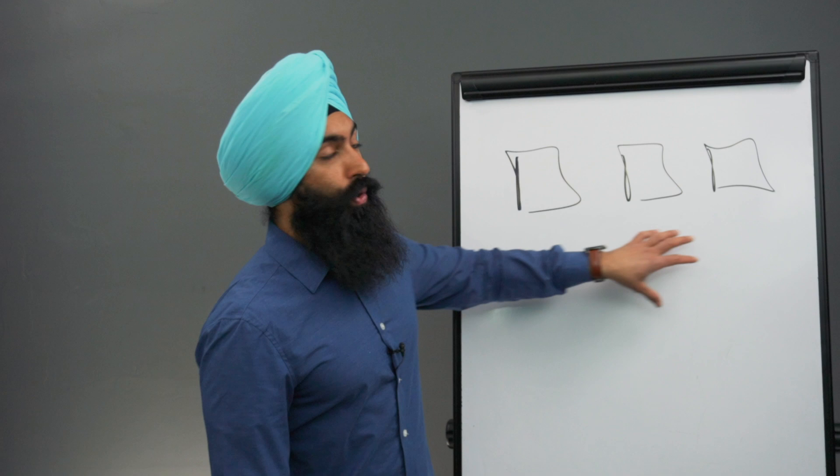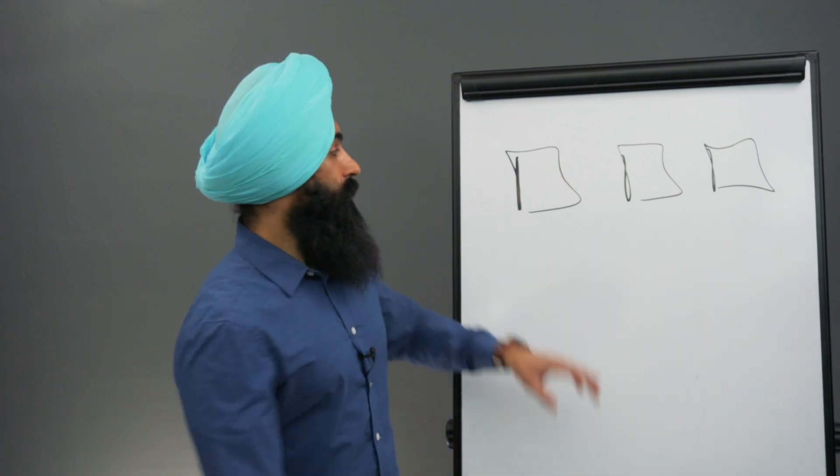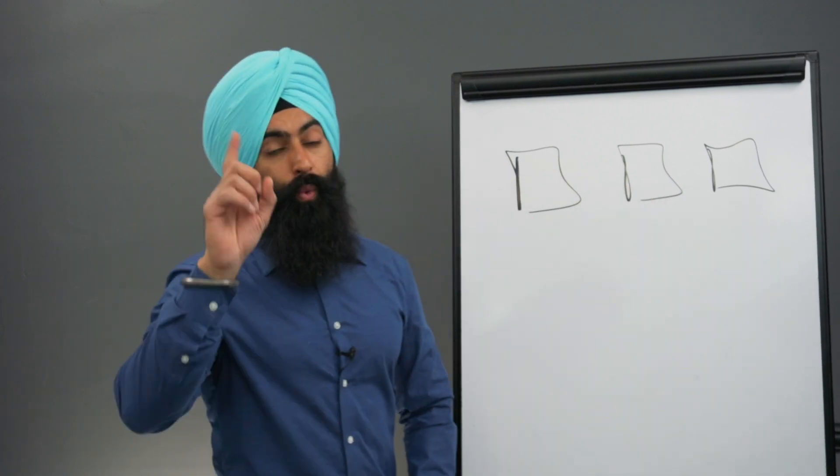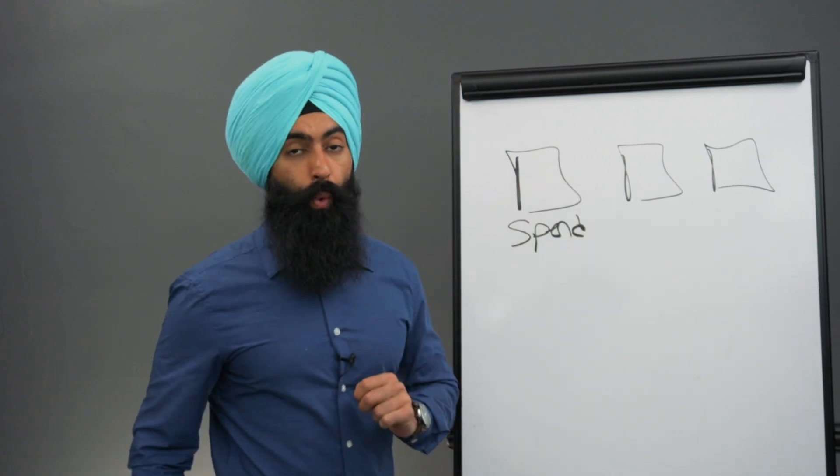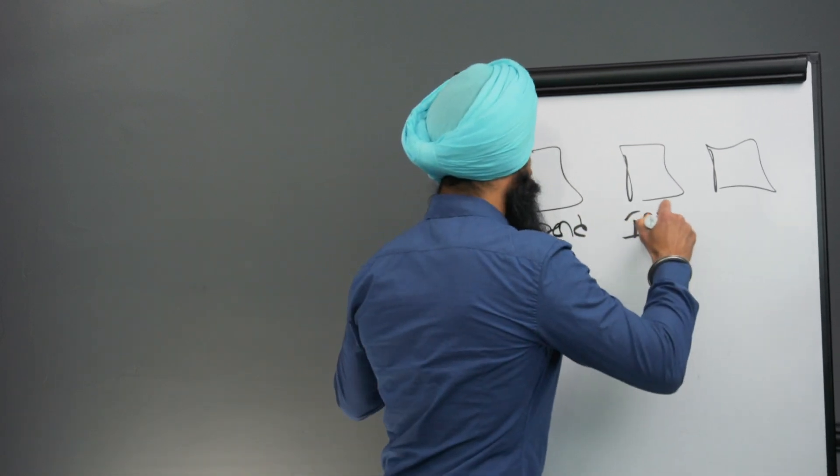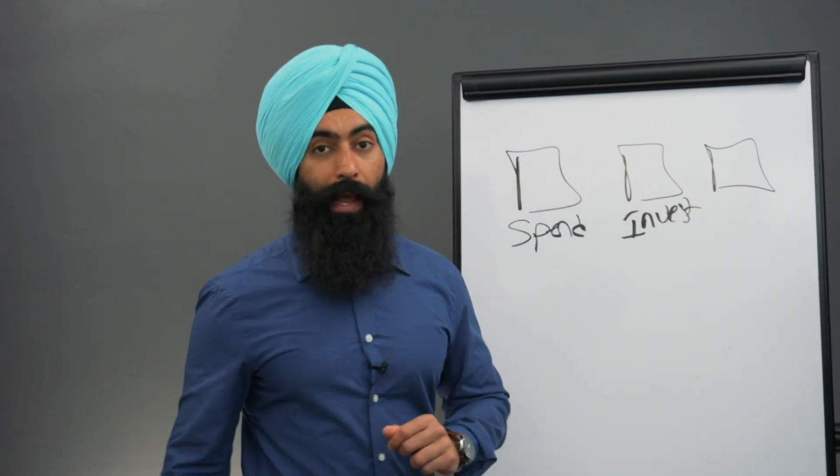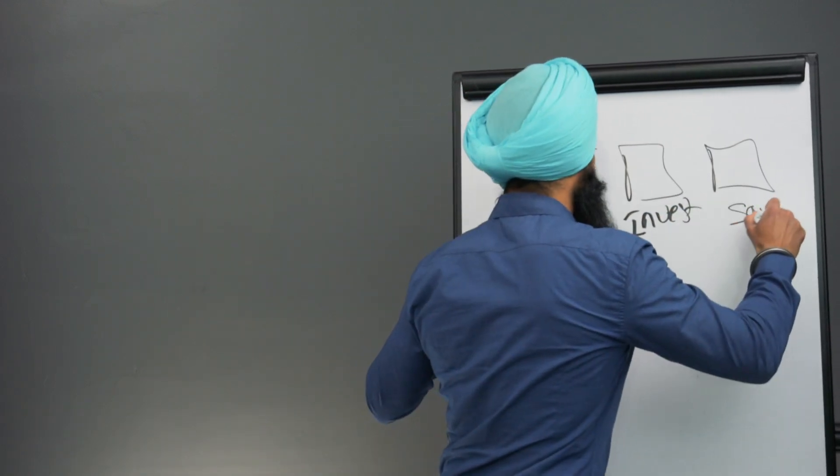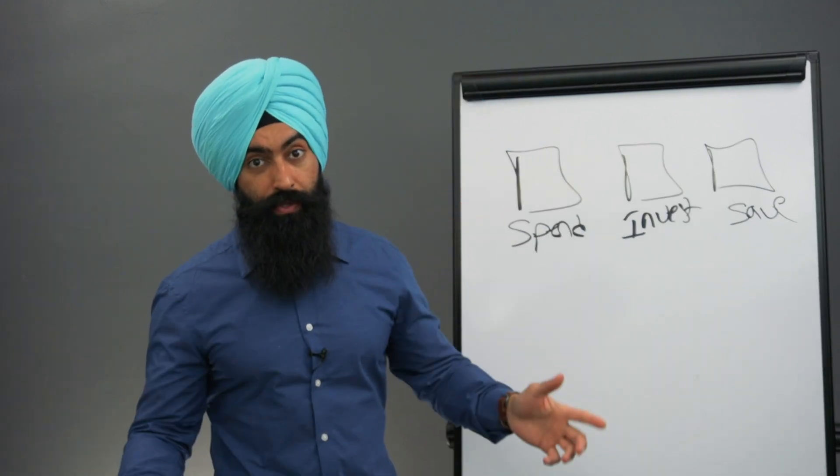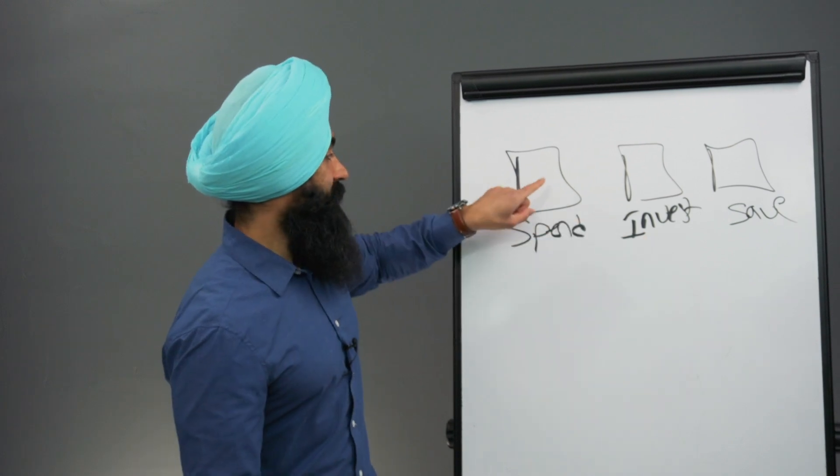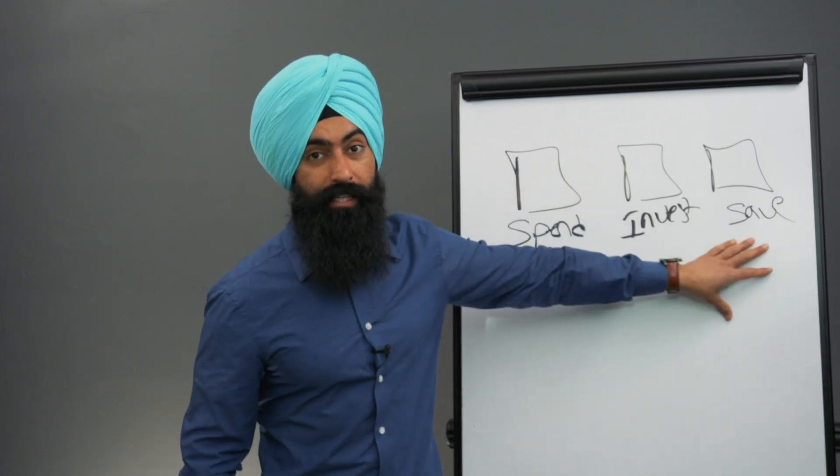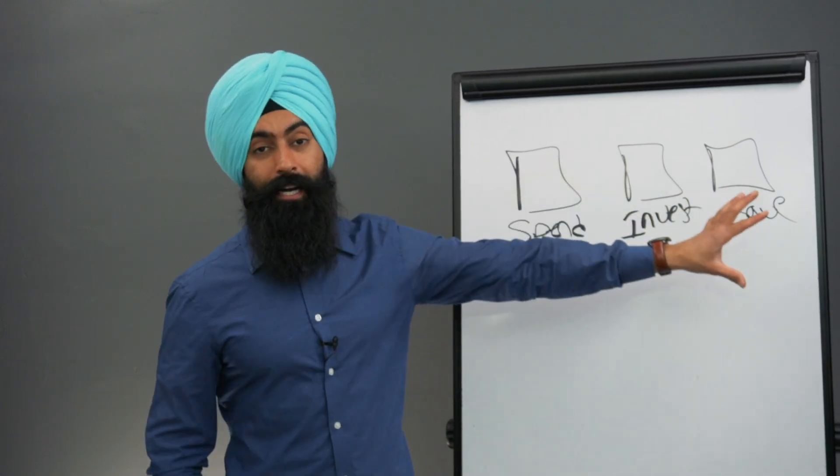So if you want to control your spending, the first thing that I want you to do is create three separate bank accounts. One bank account is going to be for your spending money. One bank account is going to be for your investing money. And one bank account is going to be for your saving money. And the reason why you want to do this is so you don't accidentally spend your investment money, or so you don't accidentally spend the money that's supposed to be saved, because now it's out of sight, out of mind.